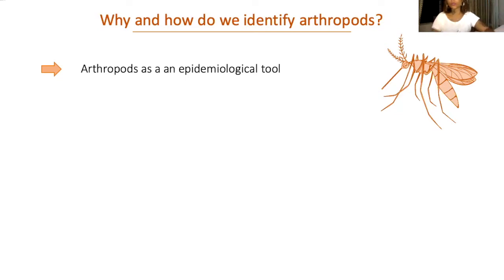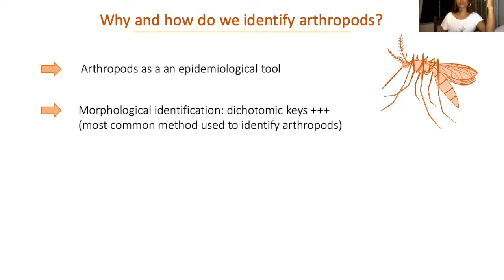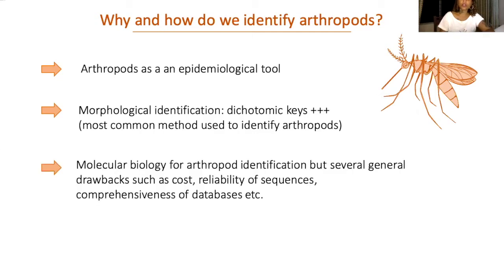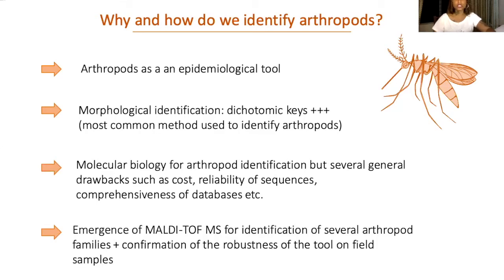How do you identify arthropods? There are several gold standard methods. The gold standard is morphological identification — you just look at the specimen and use morphological identification keys to narrow it down to a species. Molecular biology is based on the DNA of your insect. Both methods present quite a few limits, which is why in recent years new methods have emerged, such as MALDI-TOF MS, which is what I'm going to talk about today.